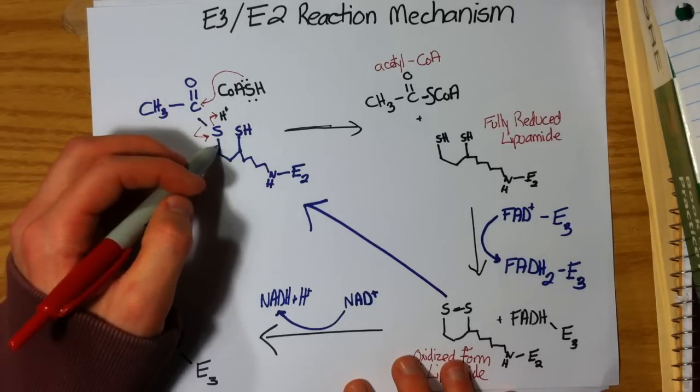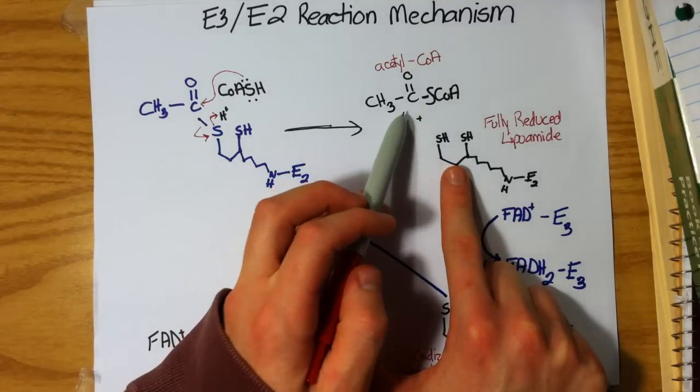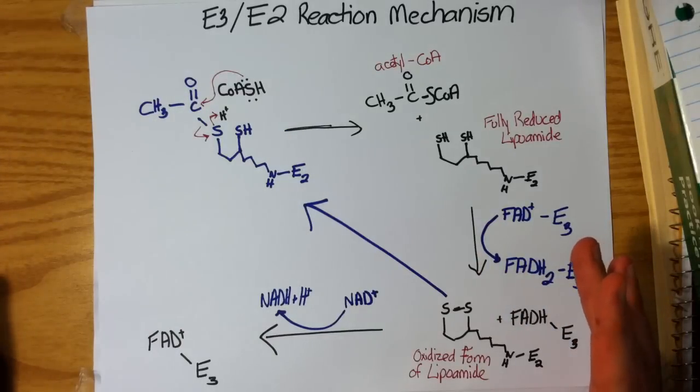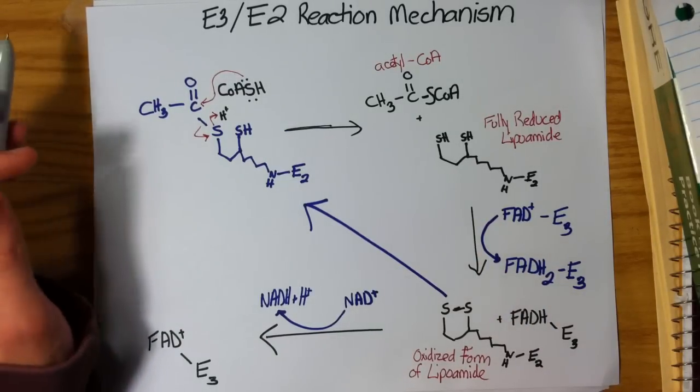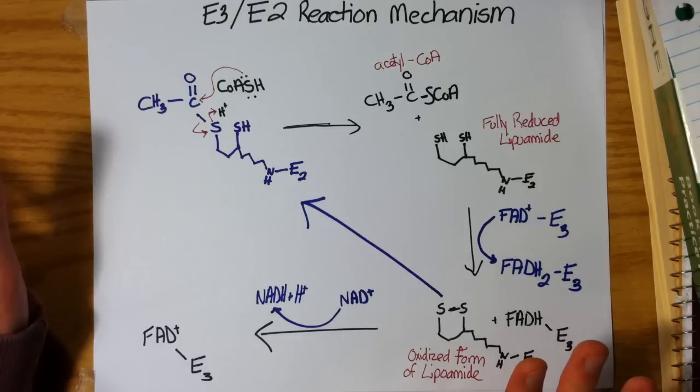This leaves us with fully reduced lipoamide and acetyl-CoA. Great, we formed our acetyl-CoA. We're done with this aspect. Acetyl-CoA is formed. That's all we wanted to do is convert pyruvate into acetyl-CoA.